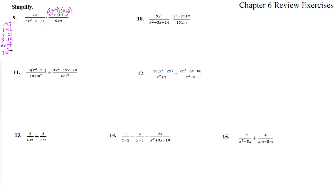So this becomes 2x squared plus 6x minus 7x minus 21. Chainsaw method: take out 2x and we're left with x plus 3; here take out minus 7 and we're left with x plus 3. That gives us factors of 2x minus 7 and x plus 3.